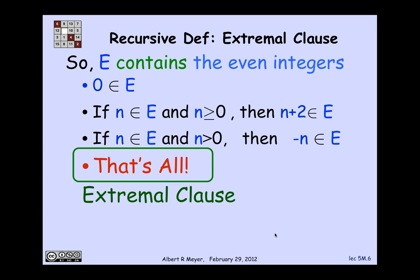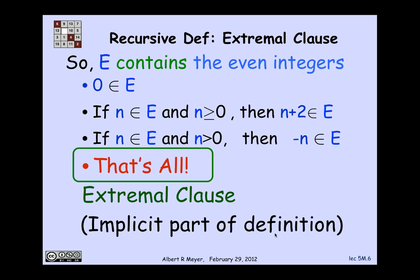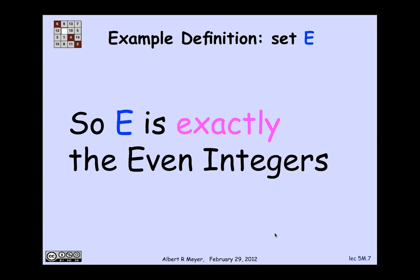There's an implicit clause here that says that's all. That implicit clause is called the extremal clause, and it's taken for granted and rarely mentioned explicitly as part of a recursive definition, but it's always to be understood. What we can conclude is that E is exactly the even integers, because there's nothing else there except those built up in the way indicated.